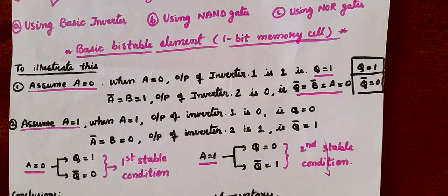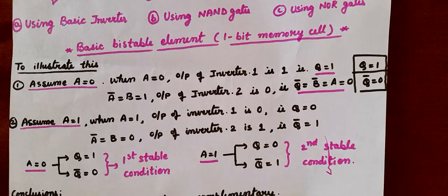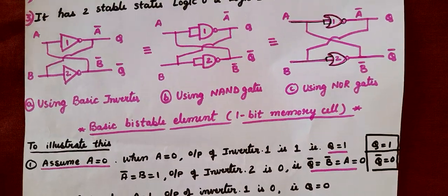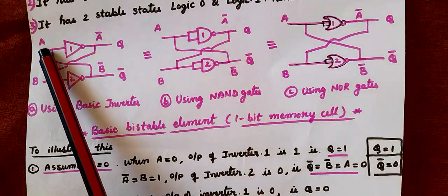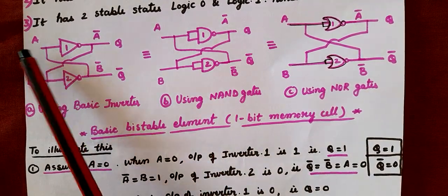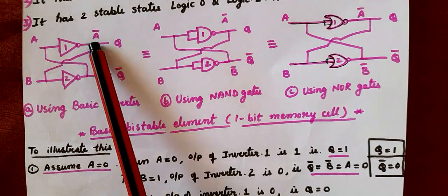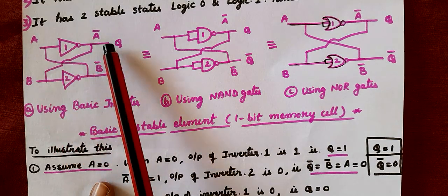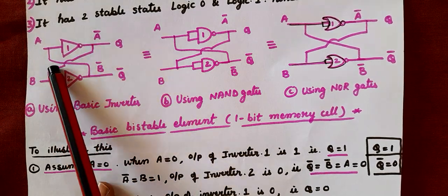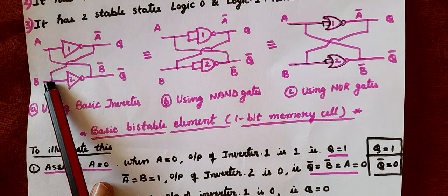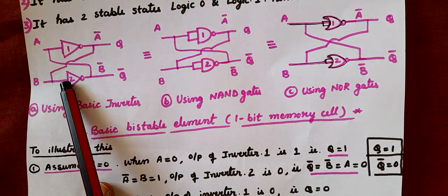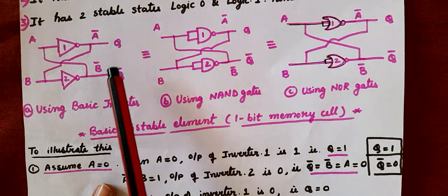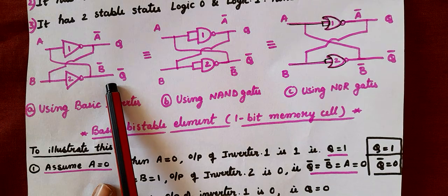Basic bistable element or 1-bit memory cell — let us assume A is equal to 0. If A is 0, what will be the output? It will be 1, so Q is 1. When A is 0, Q is 1. This 1 is fed back to the second NOT gate, so when 1 is the input to this NOT gate, the output will be 0. So the outputs are Q=1 and Q-bar=0.